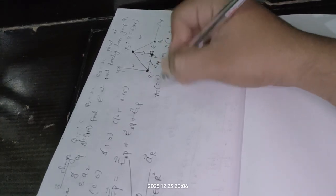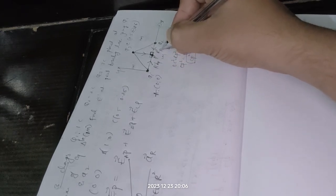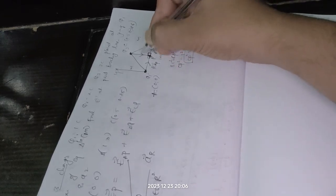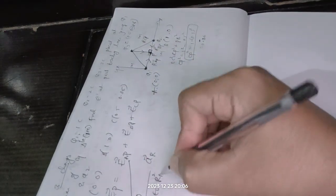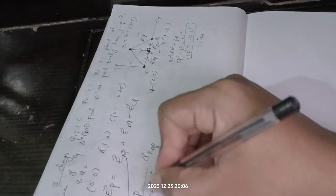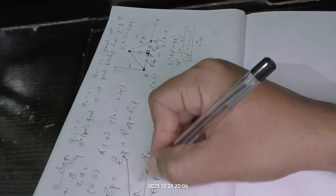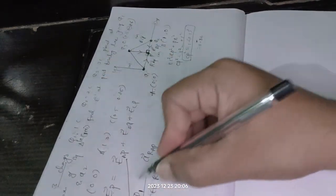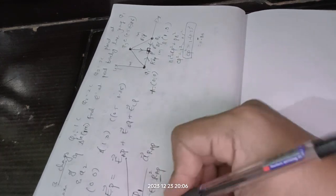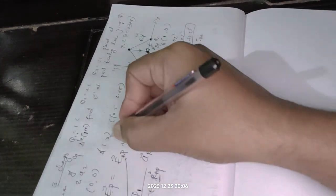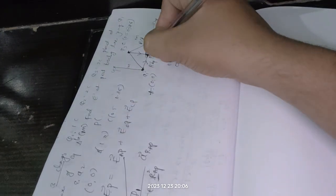So individually you calculate what is E_AP. E_AP is nothing but q divided by 4πε₀r squared into a_r. So here r is nothing but, once you take like this, r, so it is AP, A and P, so it is vector. Similarly it is r_BP, similarly it is r_CP.